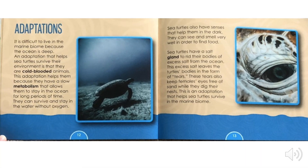Adaptations. It is difficult to live in the marine biome because the ocean is deep. An adaptation that helps sea turtles survive their environment is that they are cold-blooded animals. This helps them because they have a slow metabolism that allows them to stay in the ocean for long periods of time.